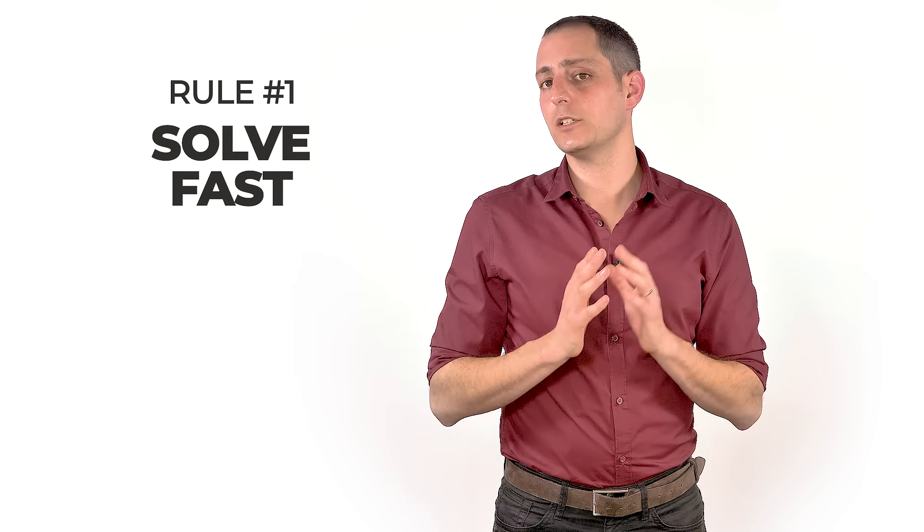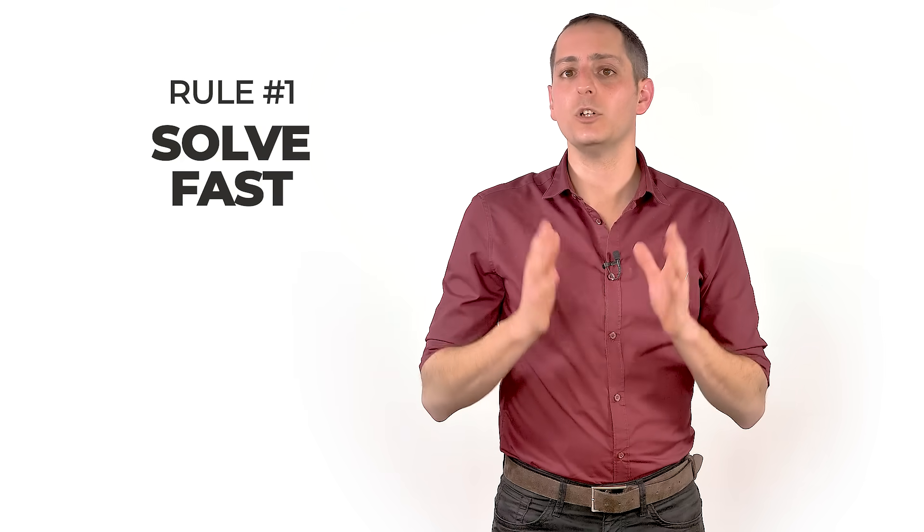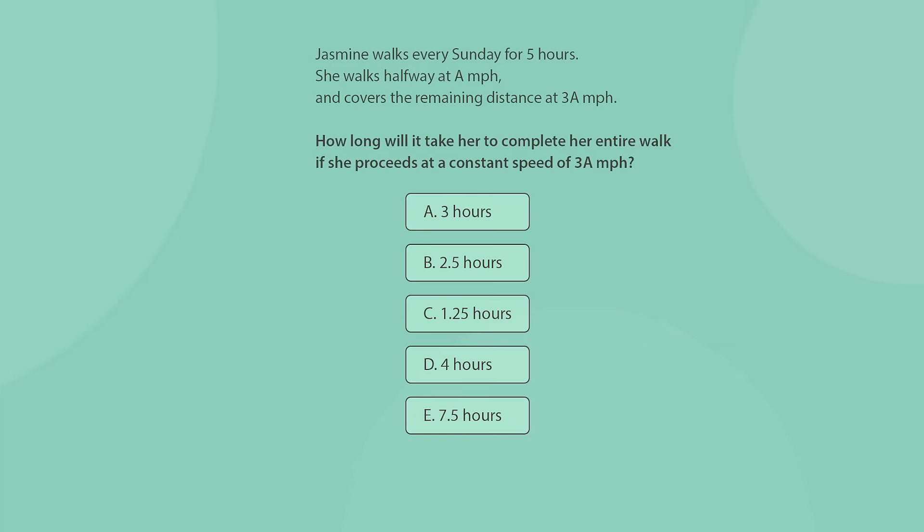That brings me to rule number one in solving CCAT questions. You need to solve fast. With 50 questions in 15 minutes, you must get accustomed to quick solving tricks and shortcuts to cover as many questions as possible. Let's see how we do it in this question. Now if you look at the question carefully, you'll see that we do not know, nor ask to find, the distance Jasmine went. That gives us a good hunch that we can completely disregard this information when solving.